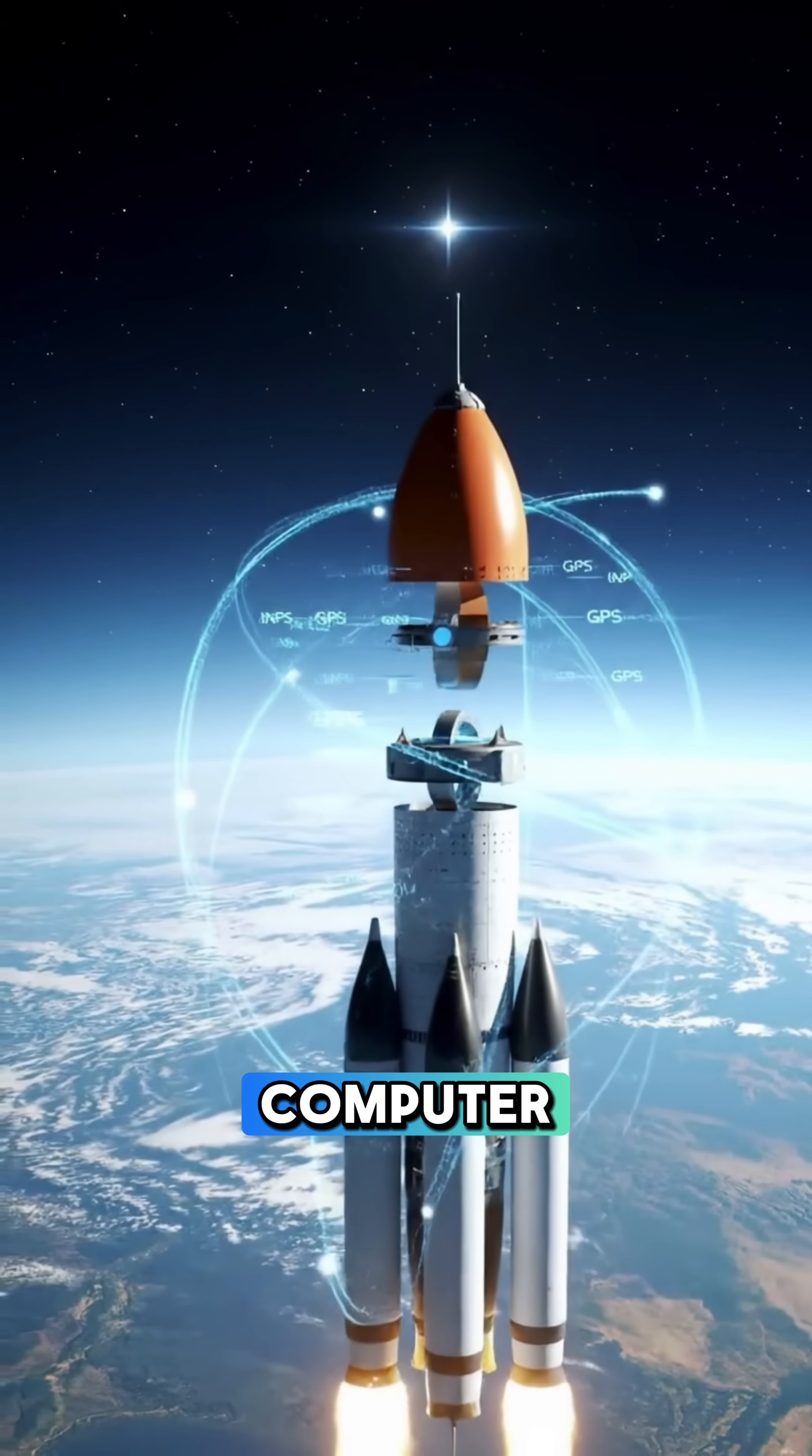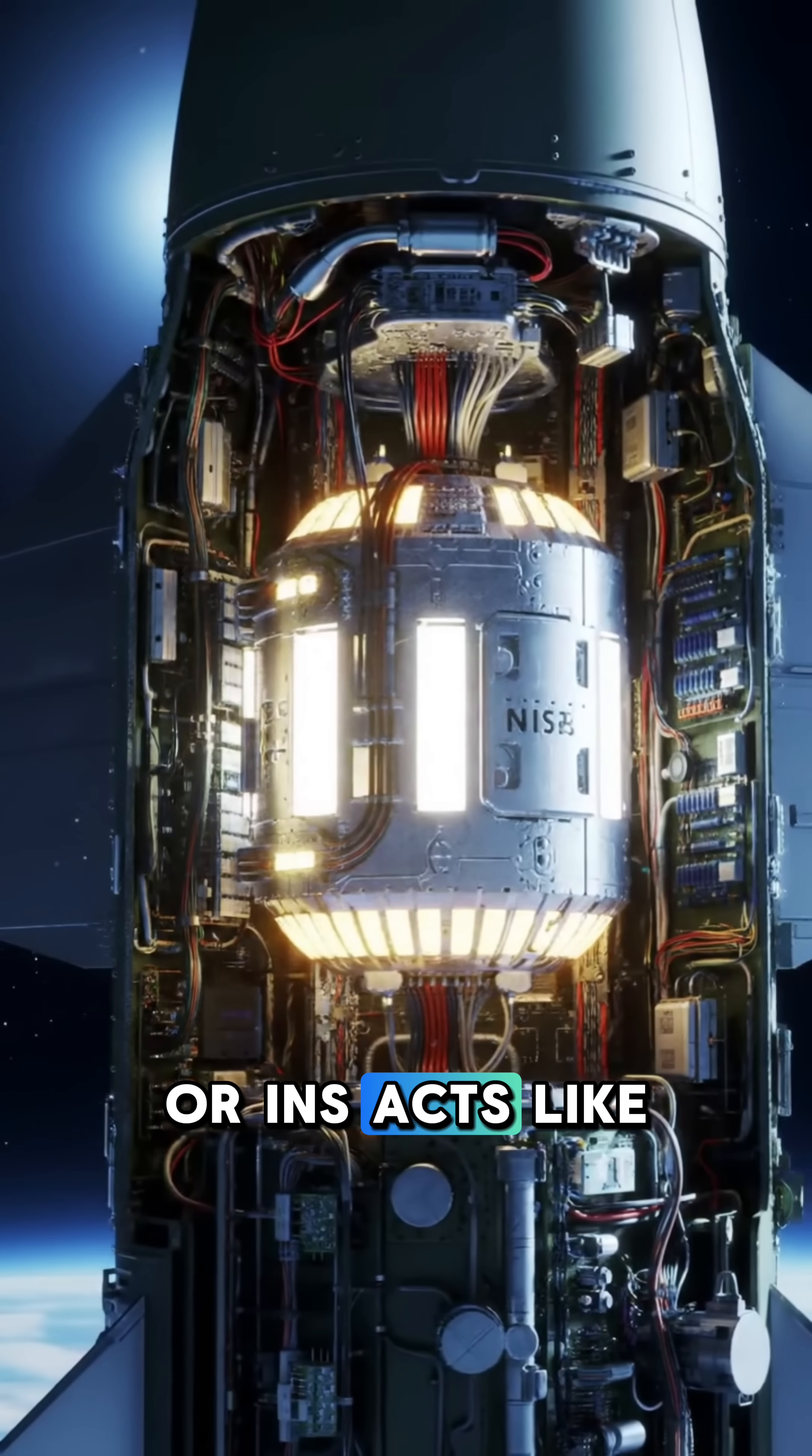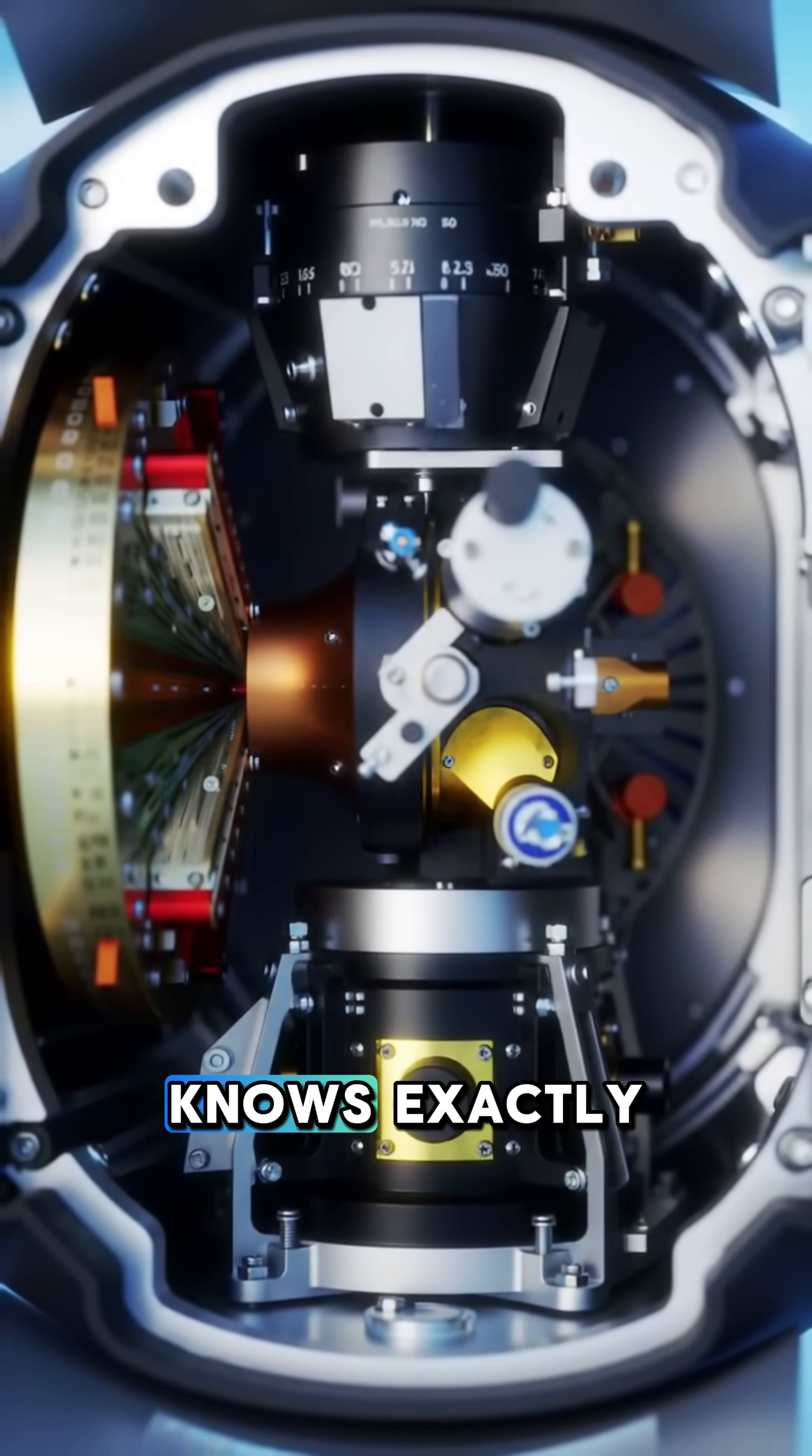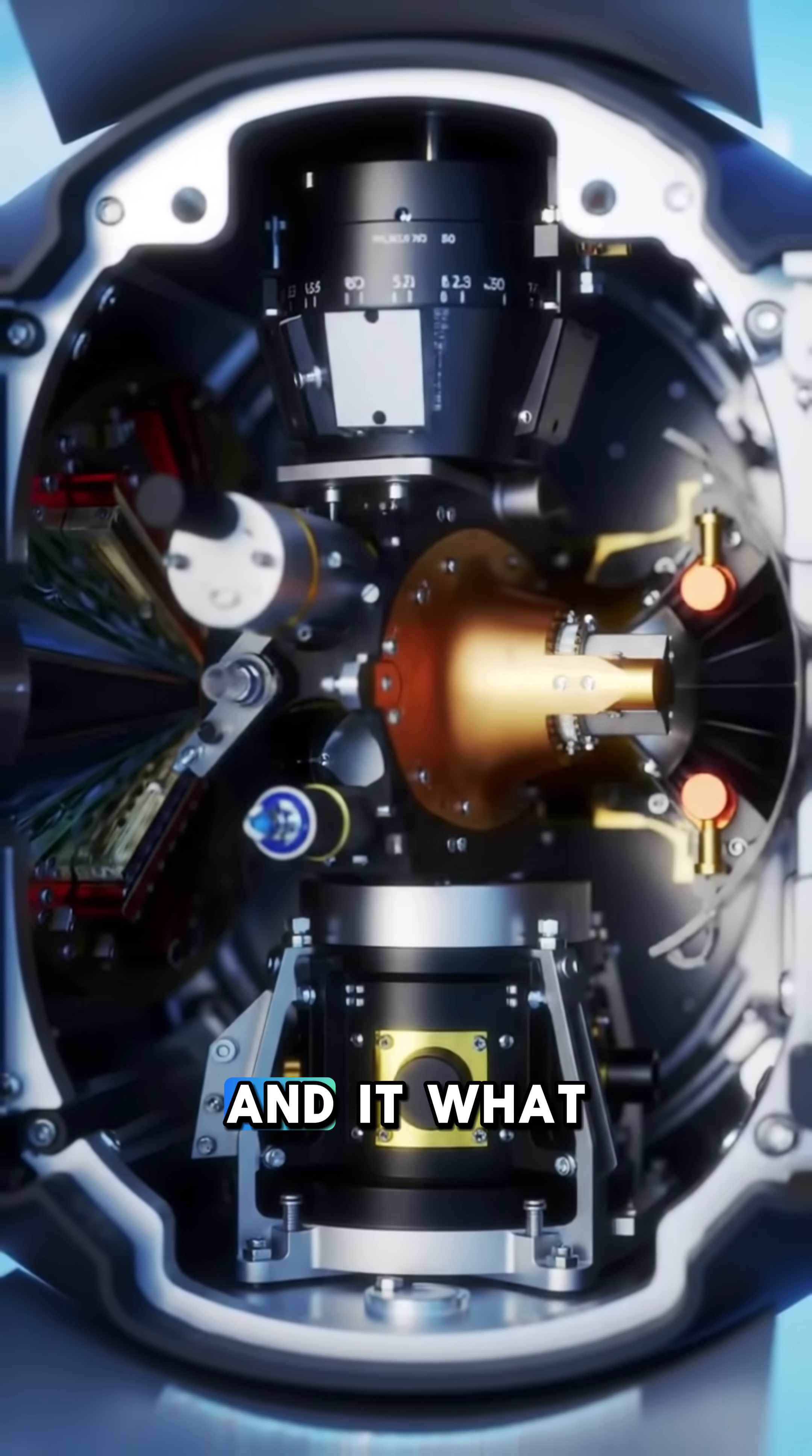Inside, a special computer called an Inertial Navigation System, or INS, acts like a super-accurate internal GPS. It constantly knows exactly where the missile is, how fast it's going, and in what direction.